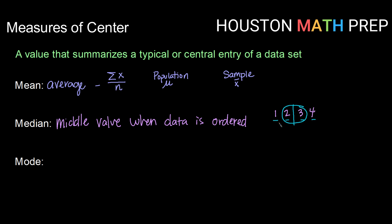So in this sample one, two, three, four, the median would be two plus three divided by two, or 2.5.